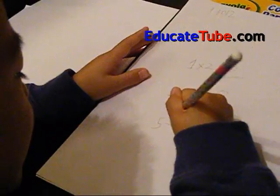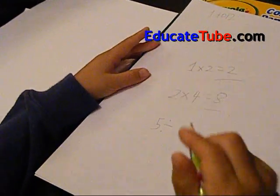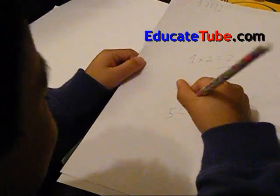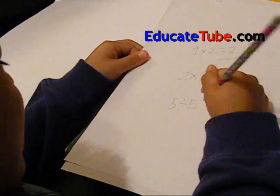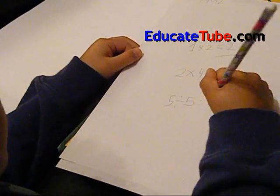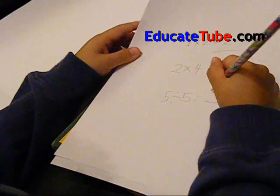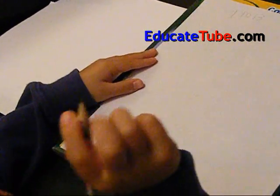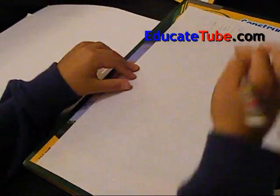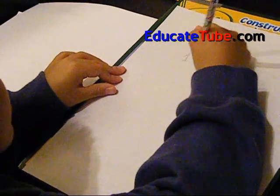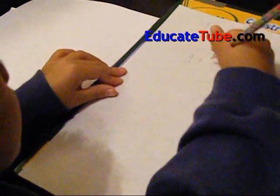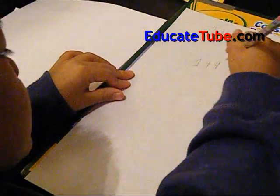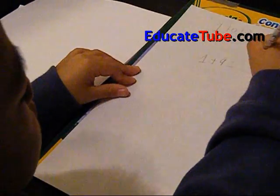5 divide by... I know you don't get divide by, but I know you know some. 5 divide by 5 equals 1. Now, on the next page, let's go one more page. So, 1 plus 9 equals 10.